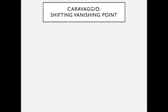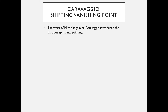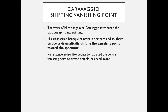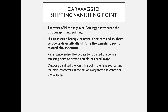Caravaggio introduced the Baroque spirit into painting. His art inspired Baroque painters in Northern and Southern Europe by dramatically shifting the vanishing point toward the spectator. Renaissance artists like Leonardo had used the central vanishing point to create a stable, balanced image. Caravaggio shifted the vanishing point, the light source, and the main characters away from the center of the painting. His paintings brought the viewer into the scene with some of the boldness we now experience with moving angle shots used by cameras in film and television.